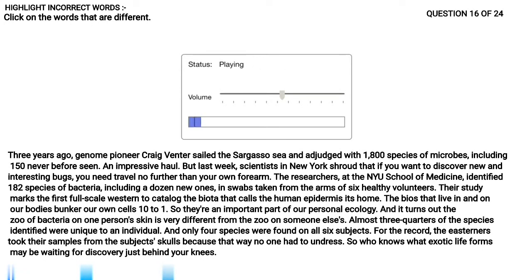This is Scientific American's 60 Second Science. I'm Karen Hopkin. This will just take a minute. Three years ago, genome pioneer Craig Venter sailed the Sargasso Sea and returned with 1,800 species of microbes, including 150 never before seen. An impressive haul, but last week scientists in New York announced that if you want to discover new and interesting bugs, you need travel no further than your own forearm. The researchers at the NYU School of Medicine identified 182 species of bacteria, including a dozen new ones, in swabs taken from the arms of six healthy volunteers. Their study marks the first full-scale expedition to catalogue the biota that calls the human epidermis its home. The microbes that live in and on our bodies outnumber our own cells 10 to 1, so they're an important part of our personal ecology. And it turns out the zoo of bacteria on one person's skin is very different from the zoo on someone else's. Thanks for the minute. For Scientific American's 60 Second Science, I'm Karen Hopkin.